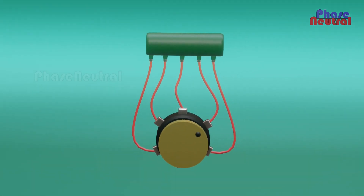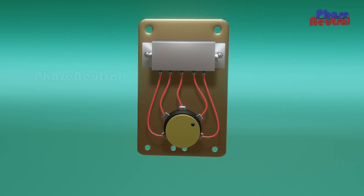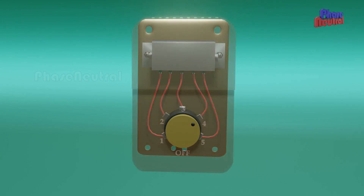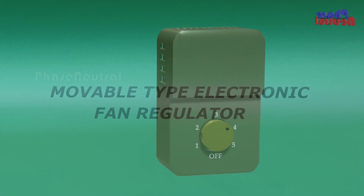The main disadvantage of the electrical fan regulator is energy loss in the form of heat when the fan runs at low speed.